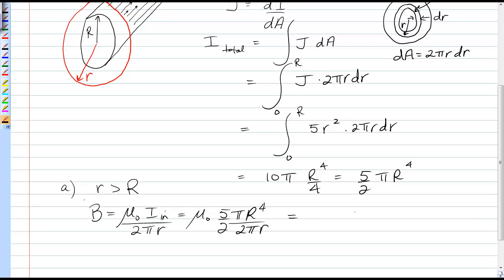And, canceling a few things there, I would have μ₀ times 5 capital R to the fourth over 4r.